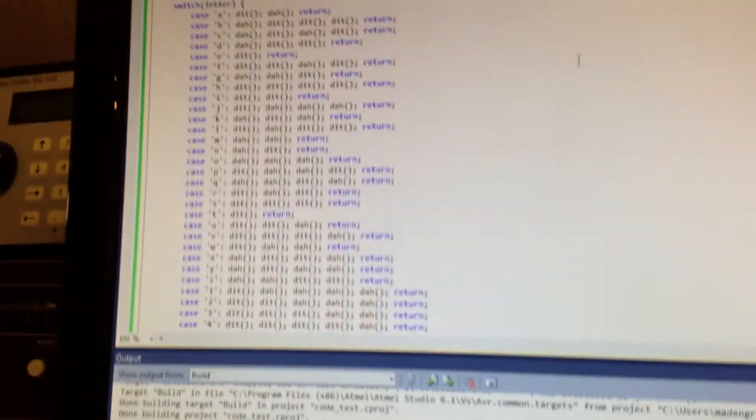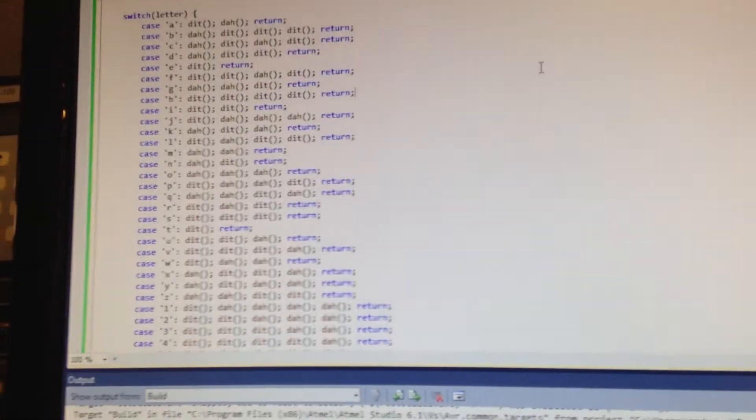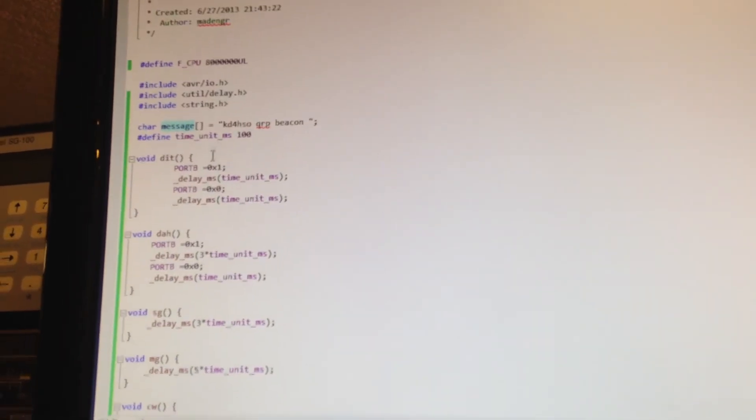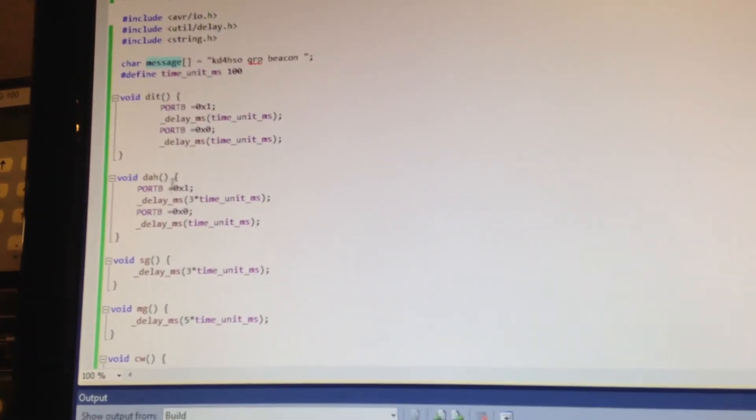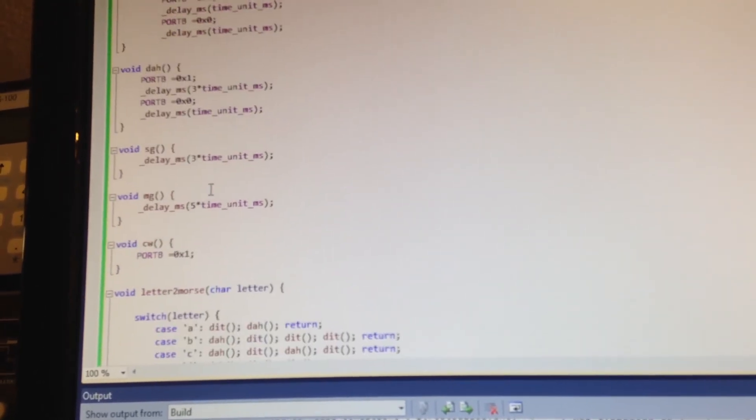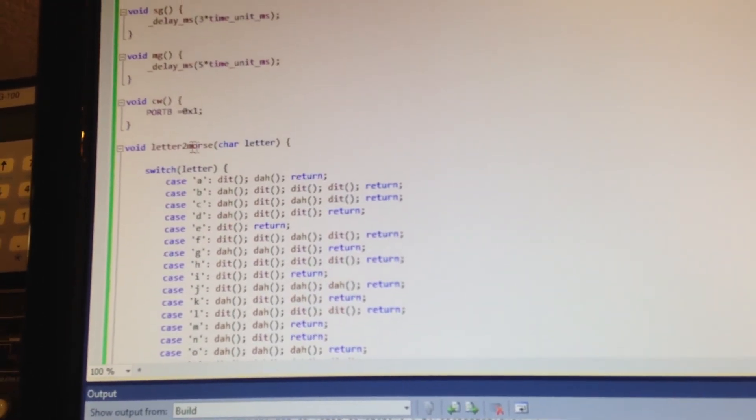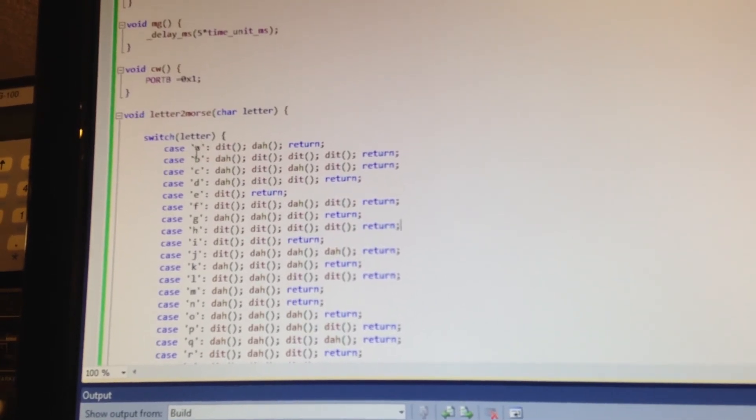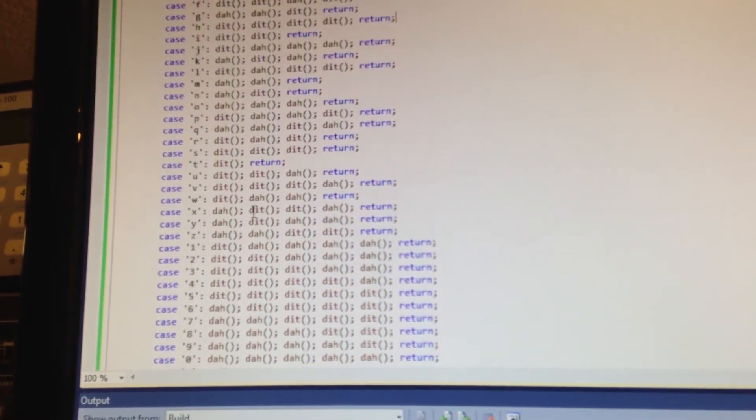The C code was just quickly done up in Atmel Studio 6. And all I do is have a couple of routines to generate a dit and a dah using the proper timings. And then I just have this switch structure right here which looks through each letter and generates a proper dit and dah sequence.